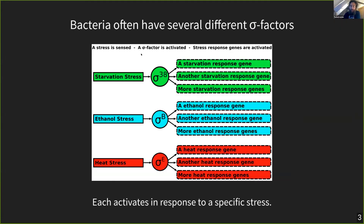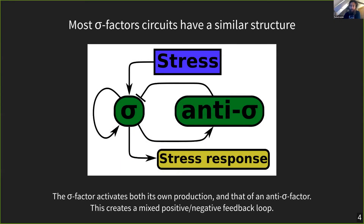There exist lots of different sigma factors. Each bacterium has its own sigma factor set, varying from species to species, but also within one bacterium you will have several different ones. Typically, for each type of stress you will have a corresponding sigma factor which regulates the appropriate stress response. In E. coli, for heat stress, you activate sigma factor E, which then activates various genes helping the bacteria live under heat conditions. Despite there being so many different types of sigma factors, the response circuits do have some very conserved properties.